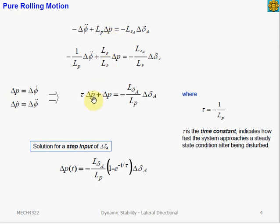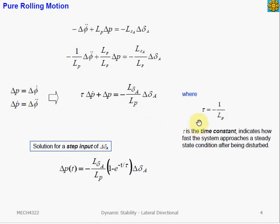We change the variable phi double dot to p dot, simplifying our equation, where the output variable is roll rate p and the input variable is aileron deflection. This is a first-order system because the highest derivative is the first time derivative, p dot. Comparing with a general first-order system, the time constant is inversely proportional to the roll damping. Note that LP is a negative value for a statically stable aircraft, so the time constant is a positive value.